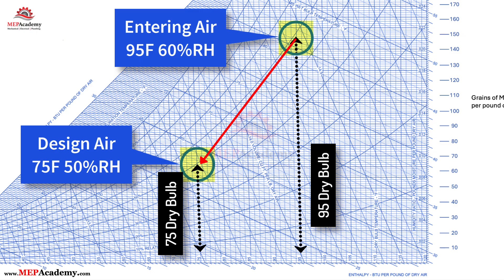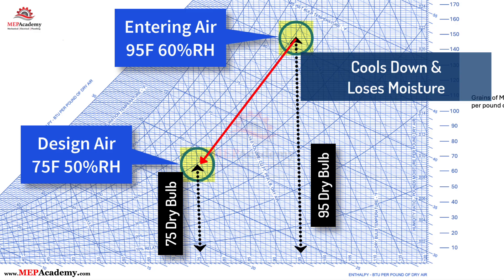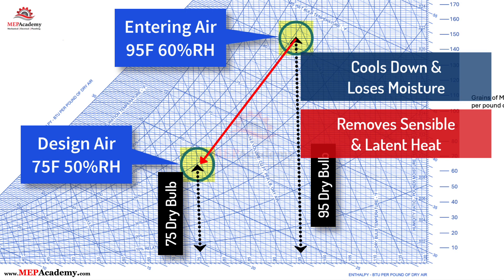Step 4: Analyze what happens along the line. As air moves across this line, it cools down and loses moisture. The cooling coil removes sensible heat and latent heat humidity. Step 5: Estimate how much water is removed.